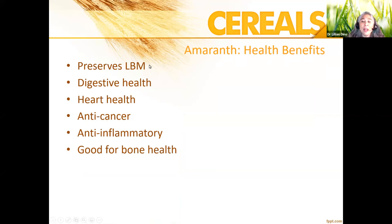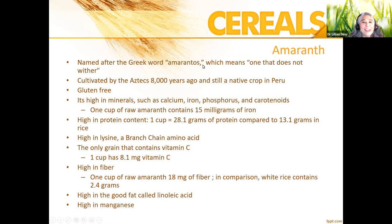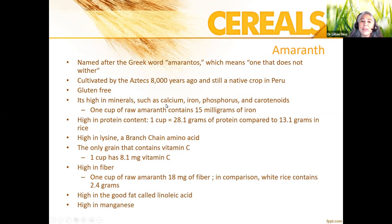Amaranth has been shown to preserve lean body mass, which is so important as we age and naturally lose muscle. It's a great addition for those following a plant-based diet looking to reduce animal protein. It's also high in fiber, which supports digestive health and heart health, and it has anti-cancer and anti-inflammatory properties. Some of its vitamins and minerals are good for bone health. The name comes from the Greek 'amaranthos,' meaning 'one that does not wither' — fitting for such a nutritious food.